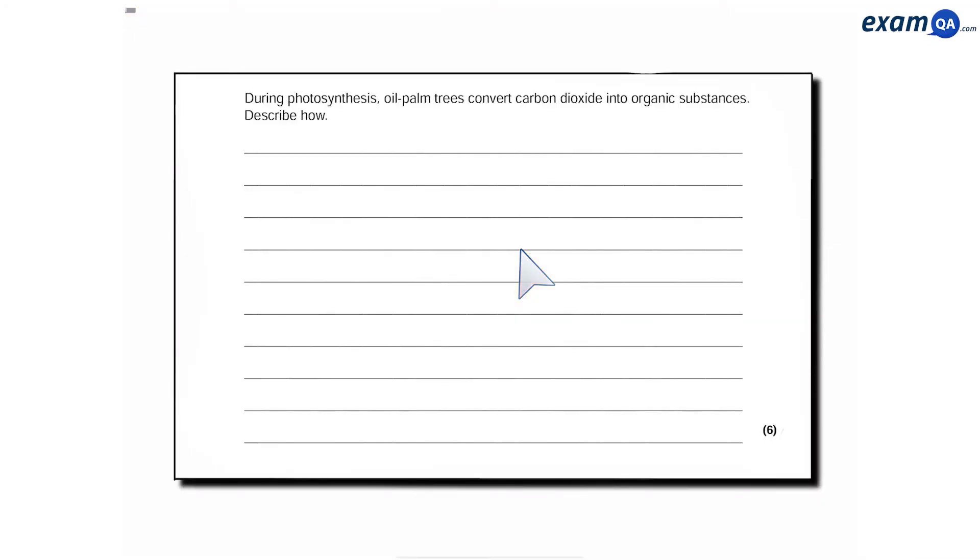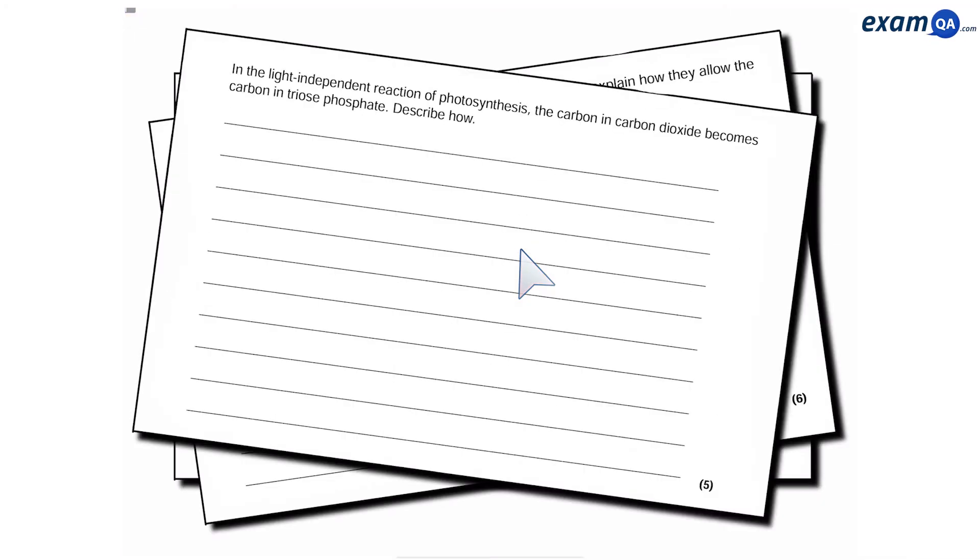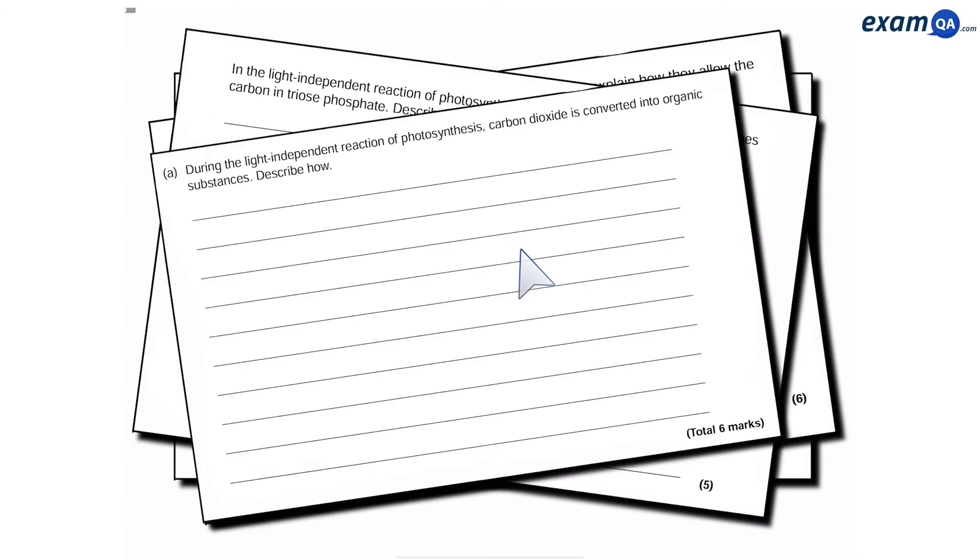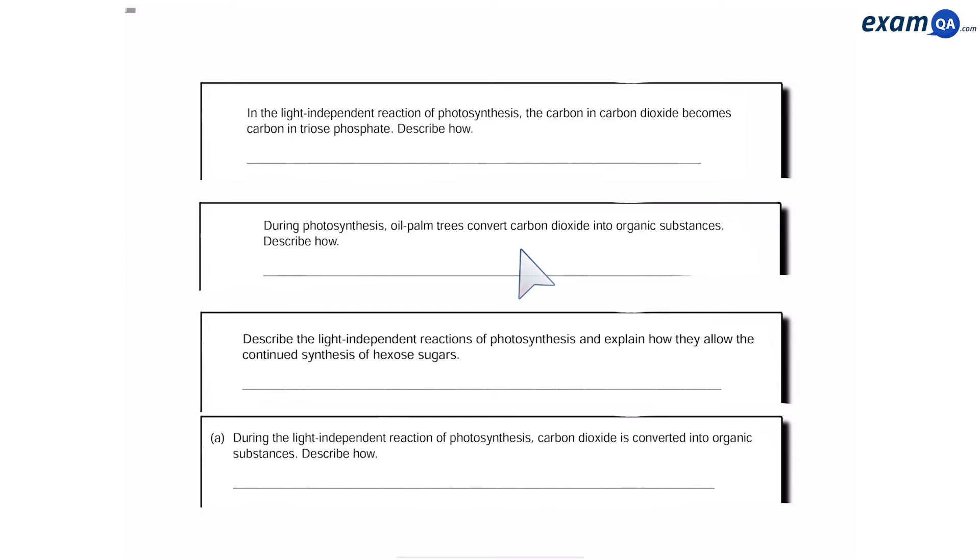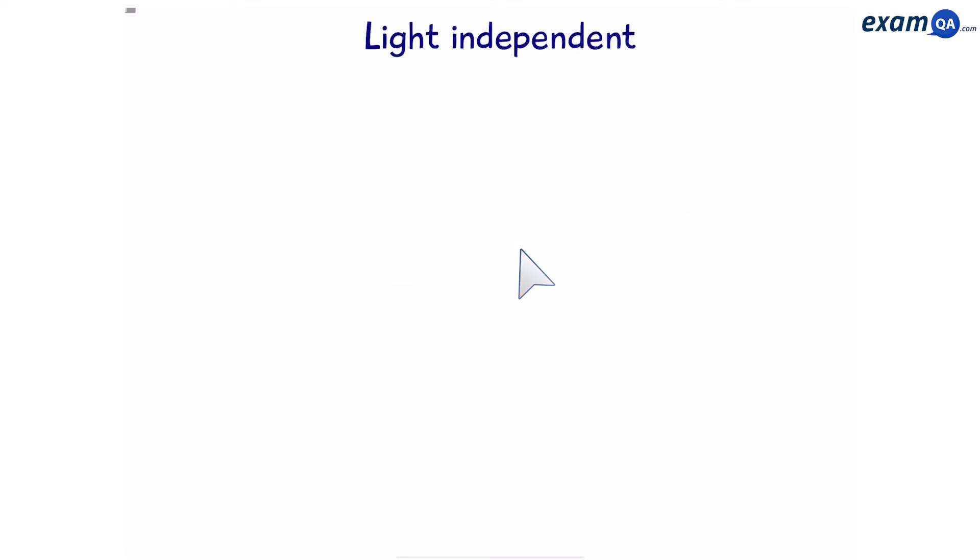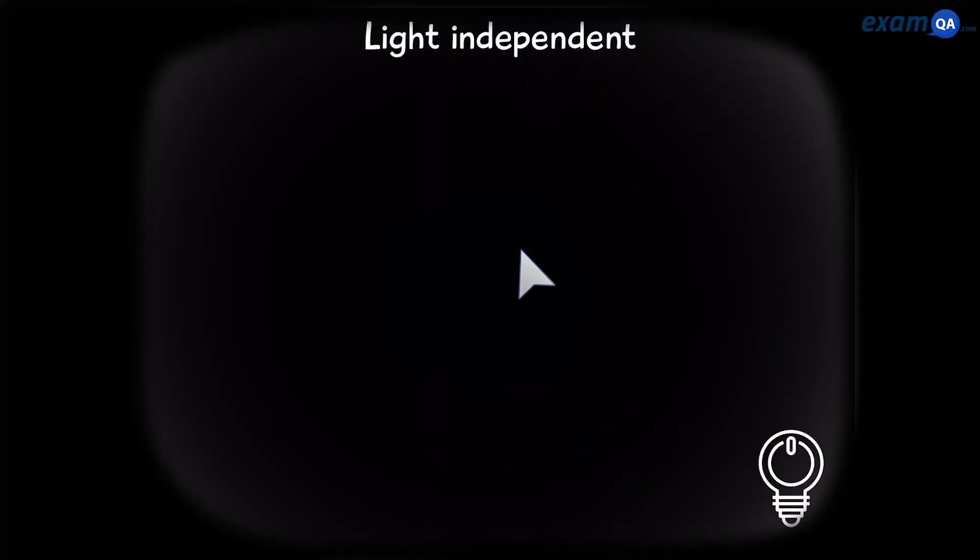Now, look at this question. This one, this one and this one. They're all 5 or 6 markers. And they're all asking the same thing. Explain the light independent or the Calvin cycle. So, just like before, we're going to write down the main points in an exam style question about the light independent reaction. Let's turn the lights off, to stay true to its name.